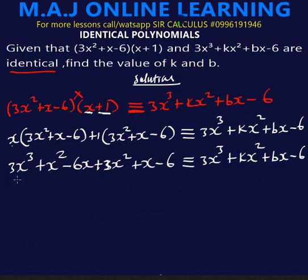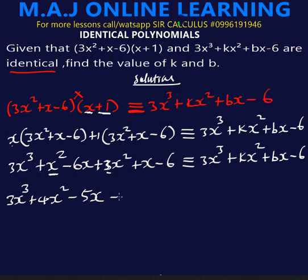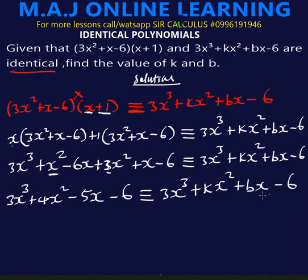We collect like terms together. We have 3x³. For x² terms: x² plus 3x² gives 4x². For x terms: −6x plus x gives −5x. So the expanded left-hand side is 3x³ + 4x² − 5x − 6, which is identical to 3x³ + kx² + bx − 6.